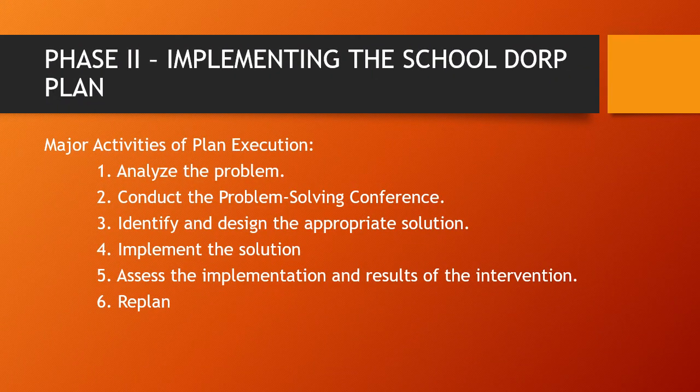Phase two, implementing the school DORP plan — major activities of plan execution: number one, analyze the problem; number two, conduct the problem-solving conference; number three, identify and design the appropriate solution; number four, implement the solution; number five, assess the implementation and results of the intervention; and lastly, replan.